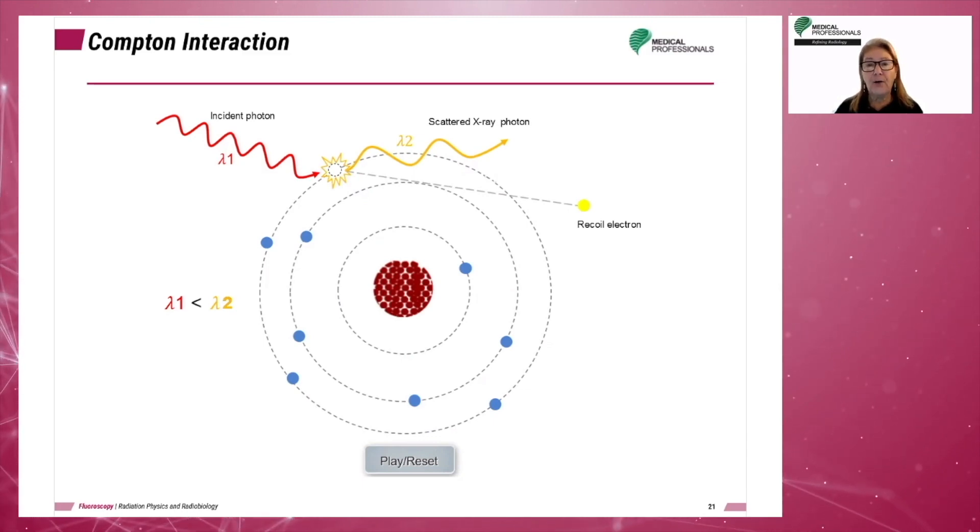Like coherent interaction, in Compton interaction, the x-ray photon interacts with an outer shell electron. Unlike coherent interaction, Compton interaction results in part of the energy of the x-ray photon being lost.